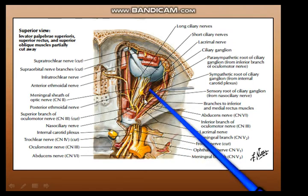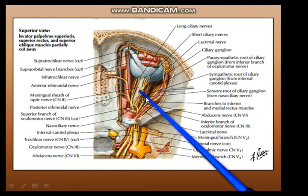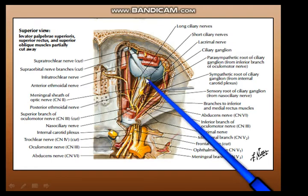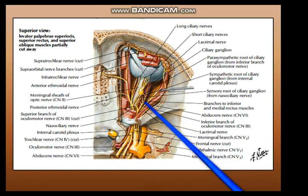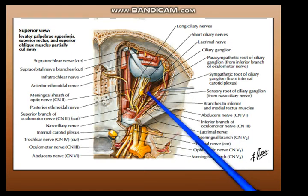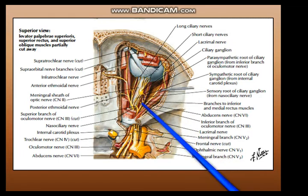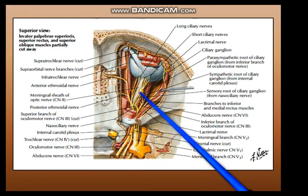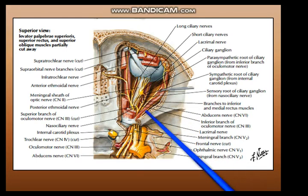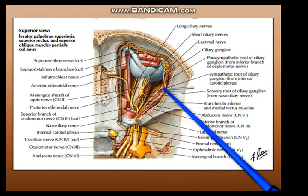The nerve to the inferior obliques feeds the ciliary ganglion with parasympathetic fibers. These parasympathetic fibers from the ciliary ganglion supply, through the short ciliary nerves, the sphincter pupillae and the ciliary muscles. So the upper division of the oculomotor nerve supplies the superior rectus and levator palpebrae superioris; the lower division supplies the inferior rectus, inferior obliques, and medial rectus; from the nerve to inferior obliques comes the parasympathetic relay to the ciliary ganglion, which exits as short ciliary nerves; and the abducens nerve goes into the lateral rectus.